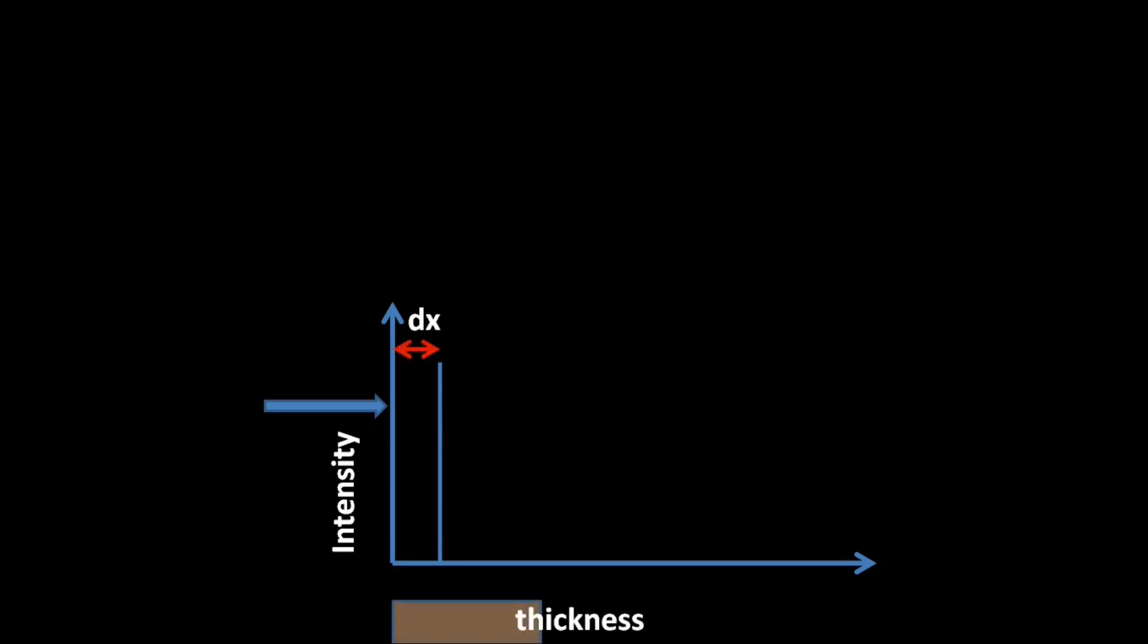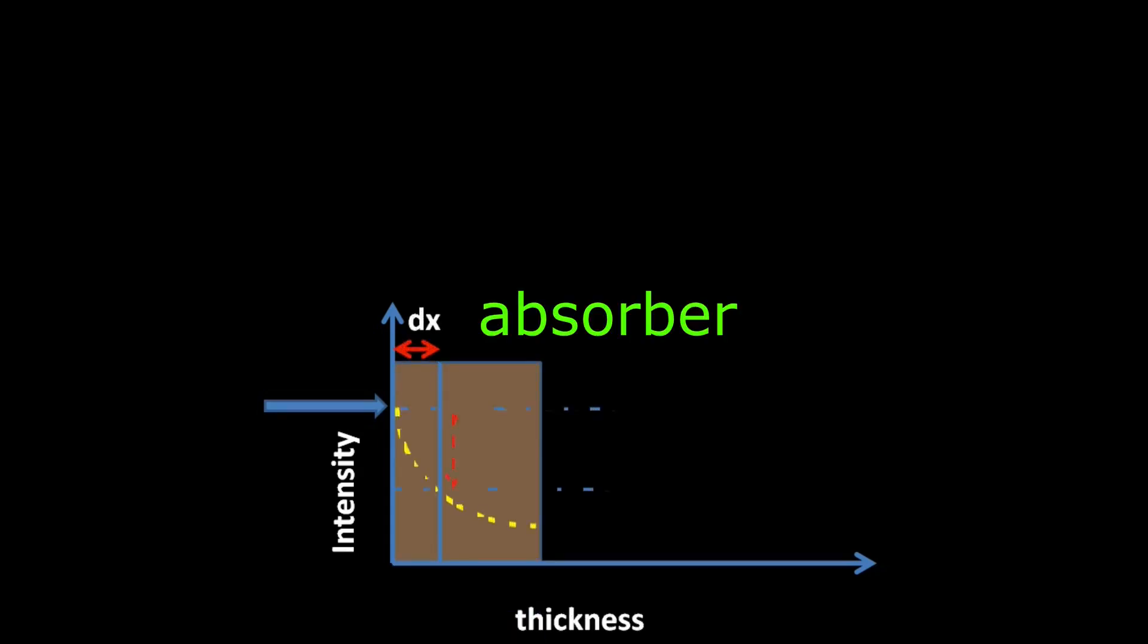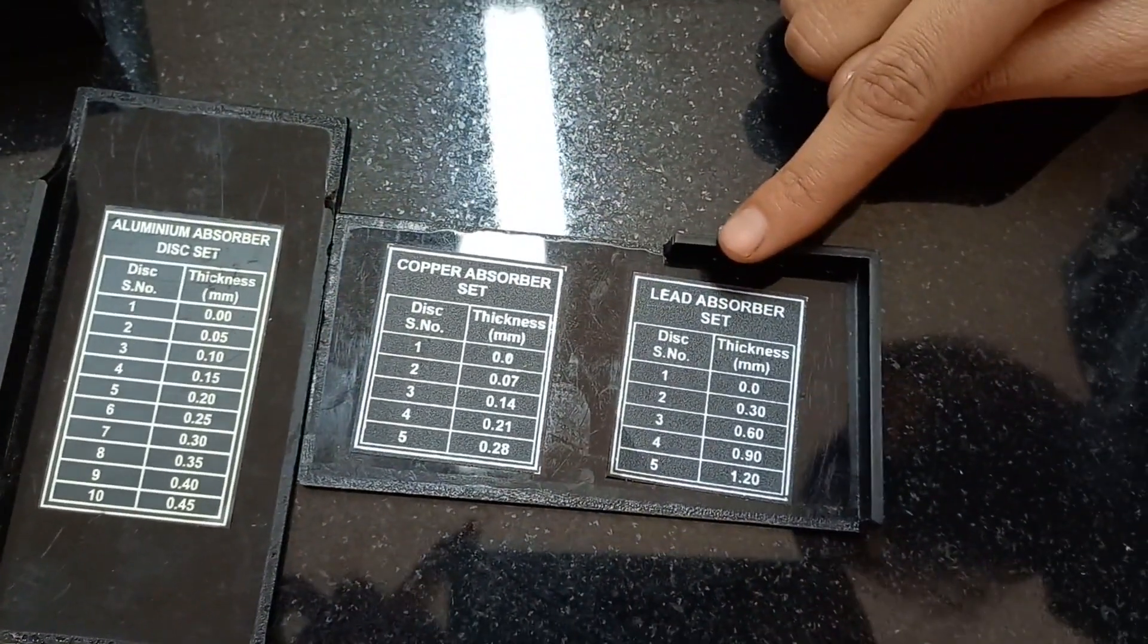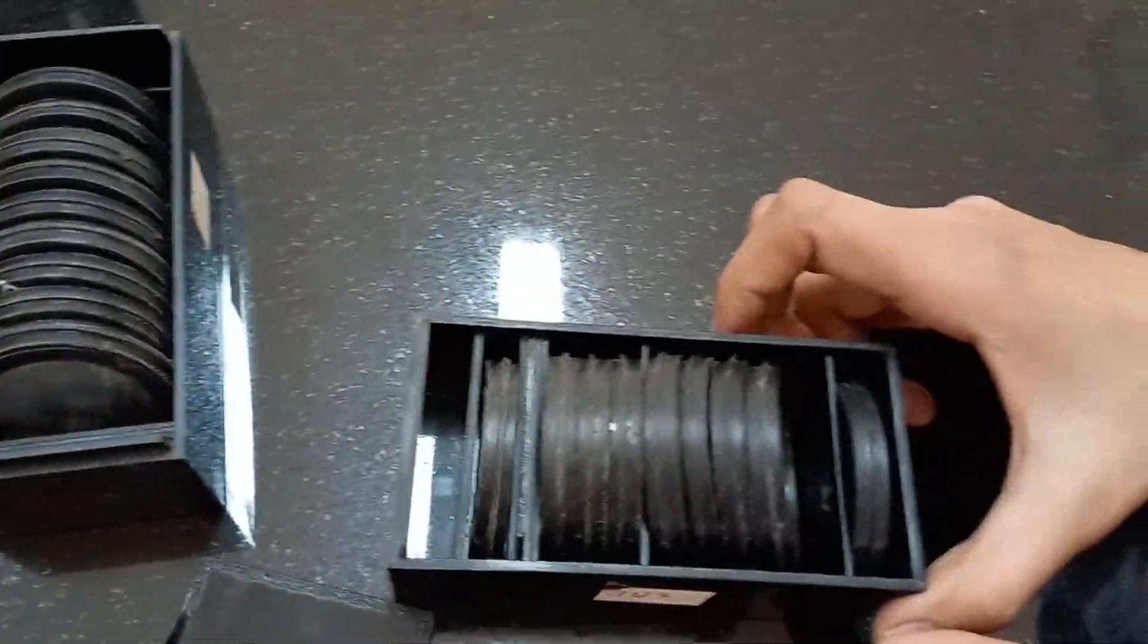What is absorption coefficient? If the intensity I of a gamma ray beam on passing through a thickness dx of an absorbing material is reduced by an amount dI – aluminum absorber, copper absorber, or lead absorber, as you can see they are placed over here.